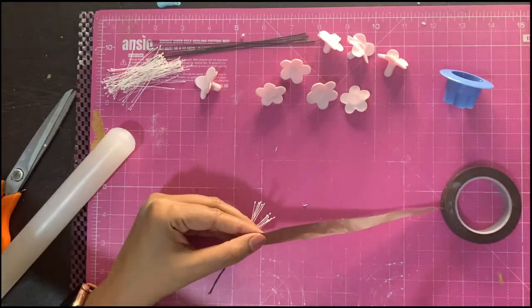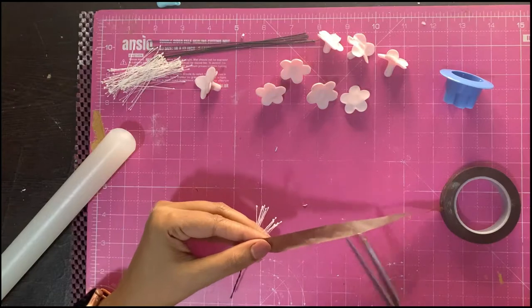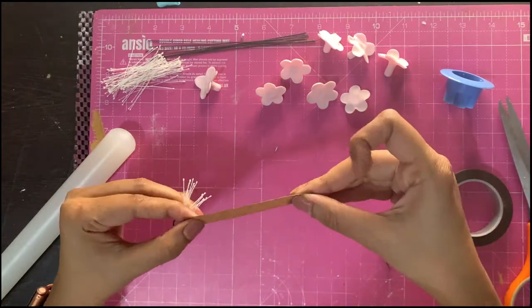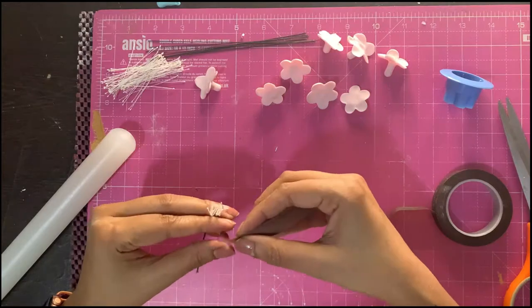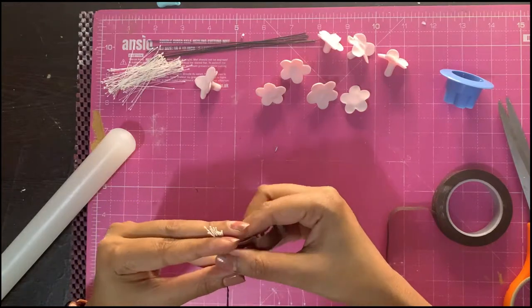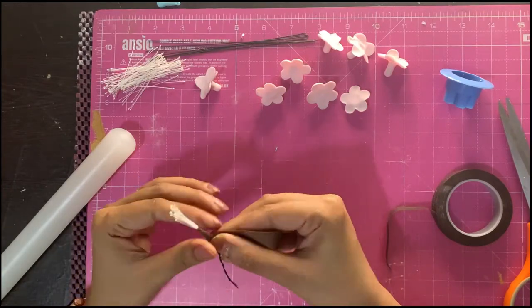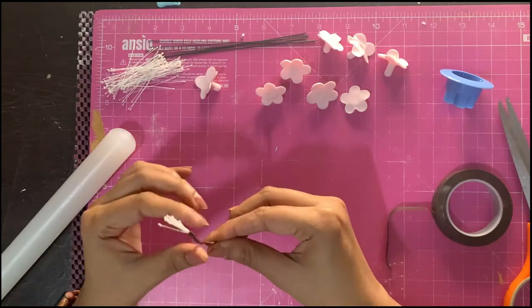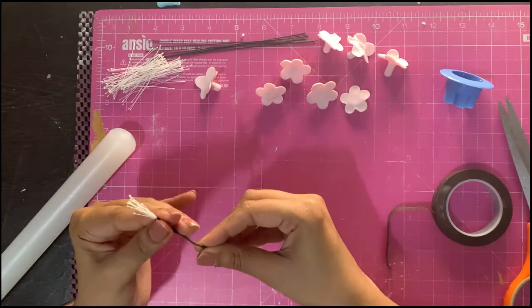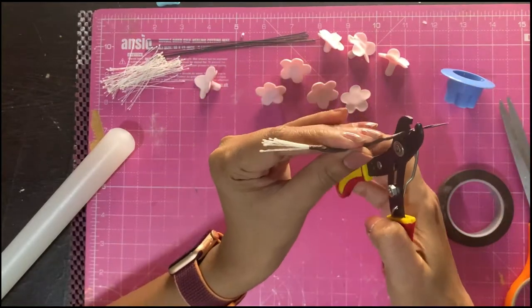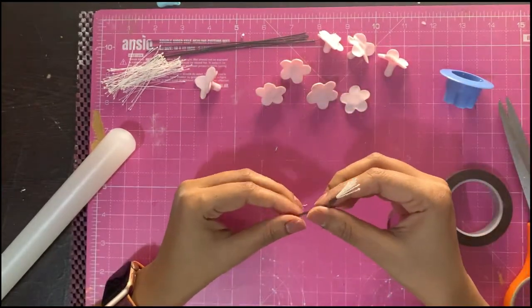Now to use the brown floral tape, stretch the tape a little to activate its adhesive. Cut it from where you need it and then start twirling it around or twisting it around the wire. Make sure it covers a little part of the pollen and the wire together. Now cut up the extra.